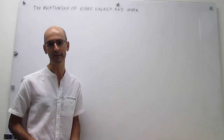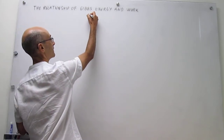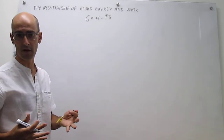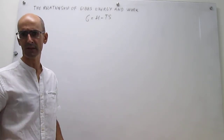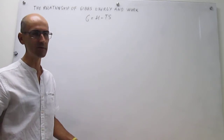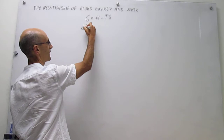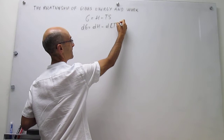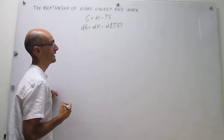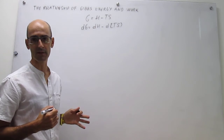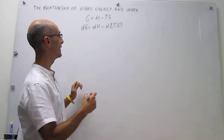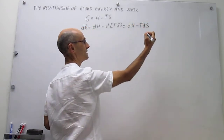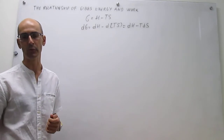We're going to start by writing the definition of the Gibbs energy and then thinking about an infinitesimal change to a process — this could be a chemical reaction or a phase transition. The change in Gibbs energy for that process would be as follows, but if we now assume that the process is taking place at constant temperature, then this expression simply reduces to T times the differential of S.